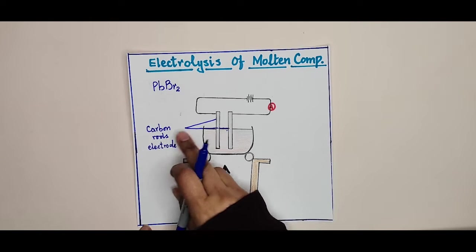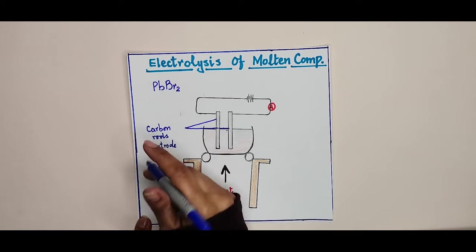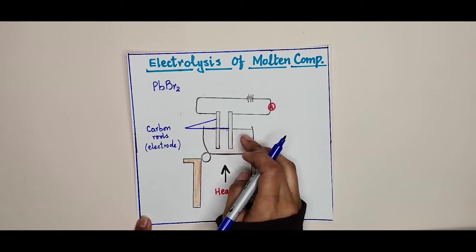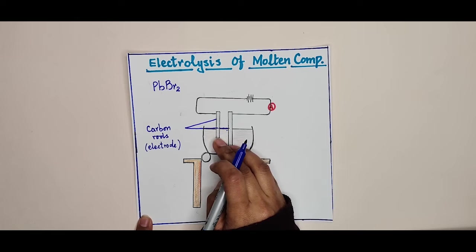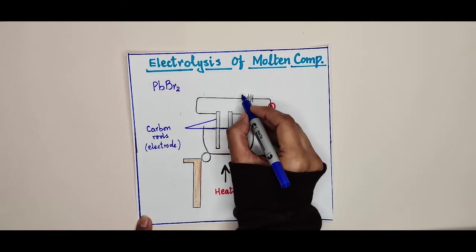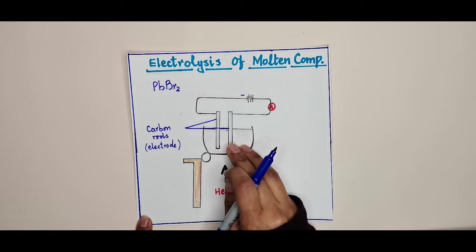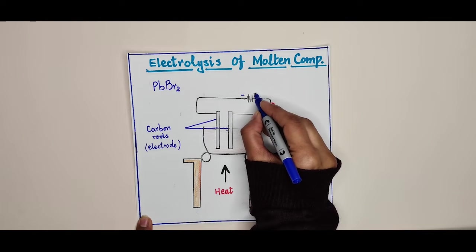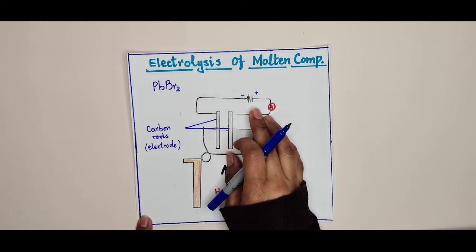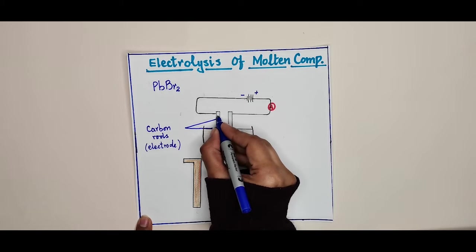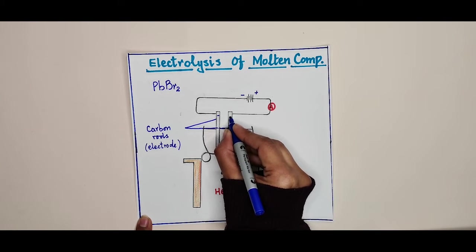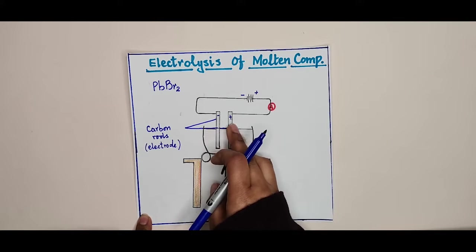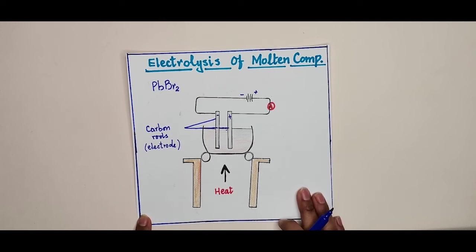These carbon rods are called electrodes. We will connect one rod to the negative terminal of the battery and the other carbon rod to the positive terminal of the battery. The negative electrode is called the cathode and the positive electrode is called the anode. We name them cathode and anode with respect to their charges.